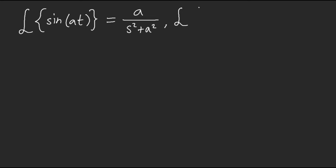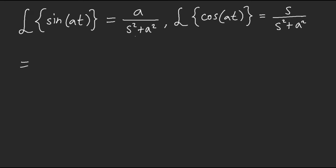The Laplace of cosine(at) — instead of a on top, now it's s, and then s squared plus a squared on the bottom. So sine has the constant on top, cosine has the variable s on top. To easily memorize that, we compute these Laplace transforms by complexifying. So e to the negative st times e to the iat represents both of these.